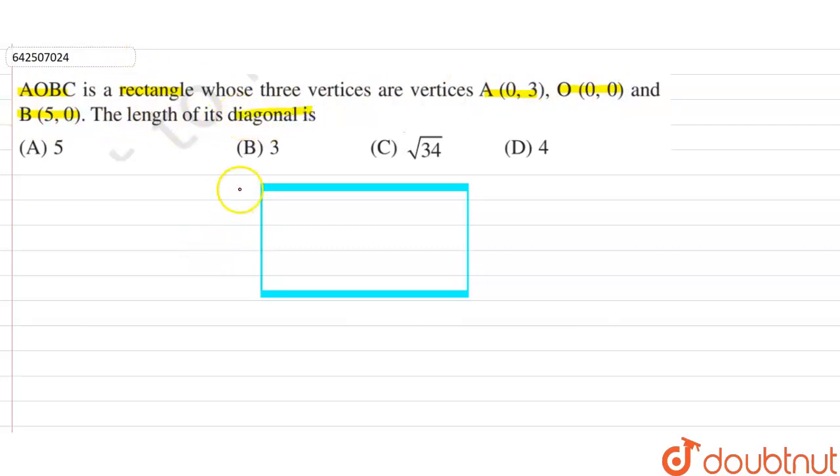So let's say this is A, O, B, C, and the vertices are point A is (0,3), O is (0,0), and B is (5,0).